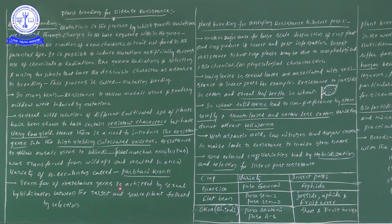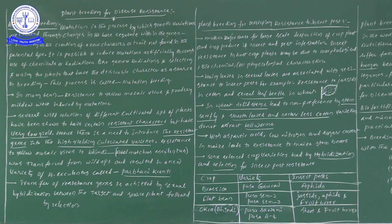The transfer of resistant genes is achieved by sexual hybridization between the target and source. By following sexual reproduction, we can transfer the resistant genes into the target from the source. The transfer of resistant genes is achieved by sexual hybridization between the target and source, followed by selection.